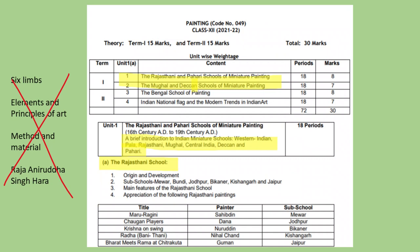This is the new syllabus. Term 1 includes Rajasthani, Pahadi, Mughal and Deccan schools of miniature painting. Six limbs are gone, elements and principles of art are gone. But this brief introduction to Indian miniature schools — that is Western Indian, Pal, Rajasthani, Mughal, Central India, Deccan and Pahadi — are still there. In Rajasthani school, method and material are gone, they are deleted, and Raja Anirudh Singh Hara painting is also now deleted.